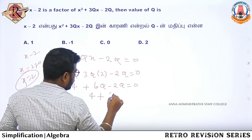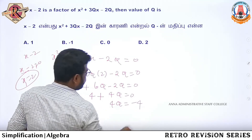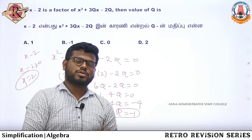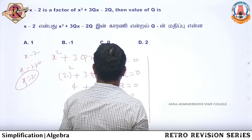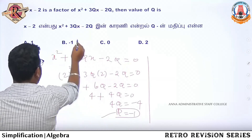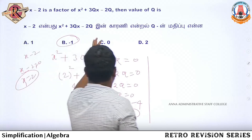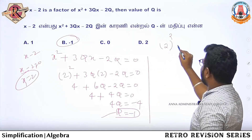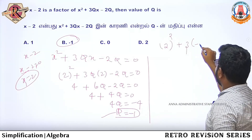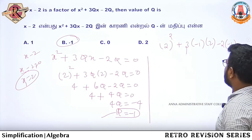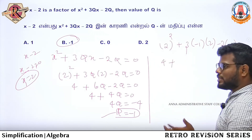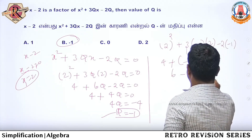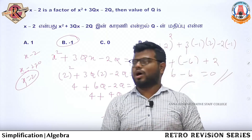So 4 plus 4q equals 0, so 4q equals minus 4, so q equals minus 1. I will verify: q equals minus 1, x equals 2. So 2 squared is 4, plus 3 times minus 1 times 2 is minus 6, minus 2 times minus 1 is plus 2. So 4 minus 6 plus 2 equals 0. Correct. Question number 5 answer is option B, q = -1.